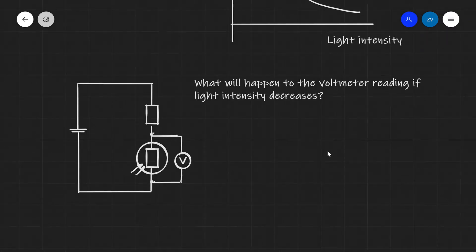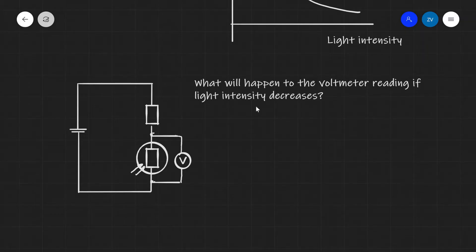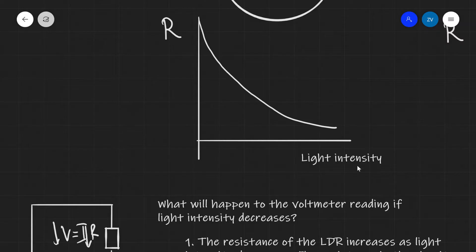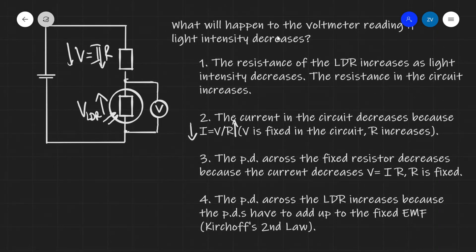Now let's have a look at one of the most typical potential divider questions. These types of questions can have multiple variations, so I'm going to do a couple of the most common ones. Imagine that we have a circuit with a fixed resistor and an LDR. We also have a voltmeter reading across here. The question is asking us what will happen to the voltmeter reading if the light intensity decreases. Our first step is to consider the resistance of the LDR as light intensity decreases. As we can clearly see from the graph, as light intensity decreases the resistance increases.